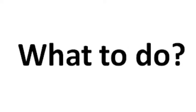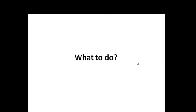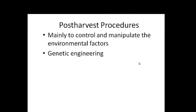So, what to do? Here comes the role of post-harvest physiology, dealing with technologies to maintain high quality produce and reduce post-harvest losses through many procedures to control and manipulate the environmental factors, such as temperature, relative humidity, atmospheric composition, etc. And sometimes, genetic engineering is used for this kind of manipulation.